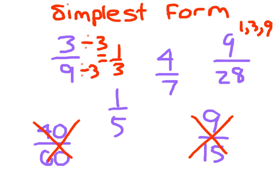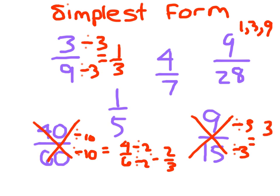So I'd cross these out here. Divided by 10, divided by 10 leaves me with 4/6. 4/6 is still not in simplest form. If I divide by 2, I get 2/3. And then this one here, we had recognized that they're both divisible by 3. 9 divided by 3 is 3, and 15 divided by 3 is 5. Thanks for playing and learning more about simplest form.